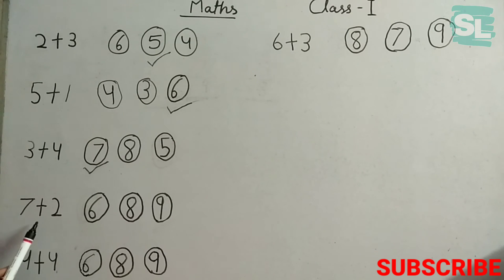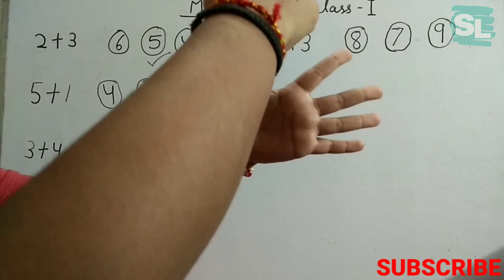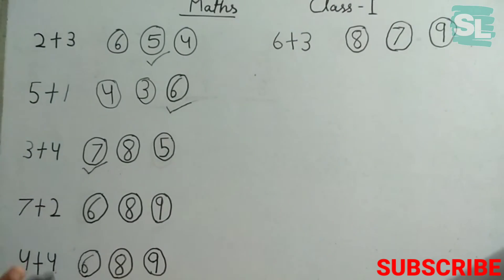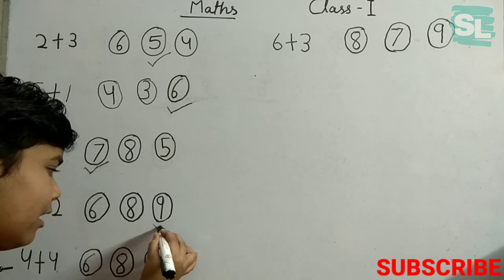Our next is 7 plus 2. Let's count it: we have 7 plants and 2 more came and joined them. 7 plants, 8 plants, 9 plants. So 7 plus 2 is 9. Here is our 9.